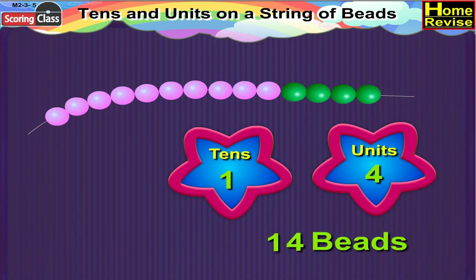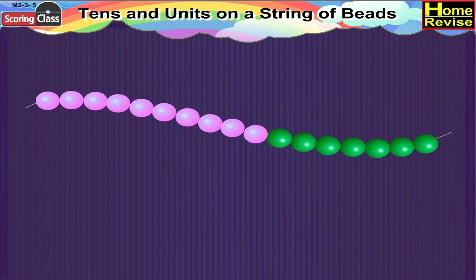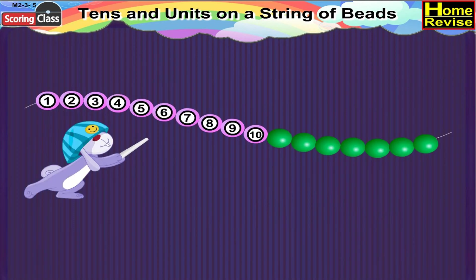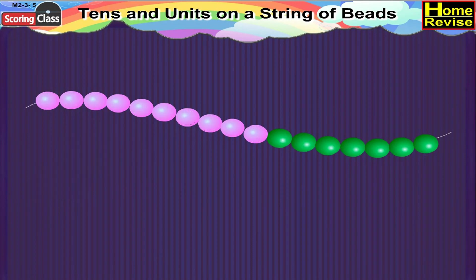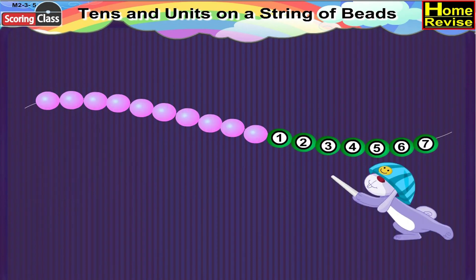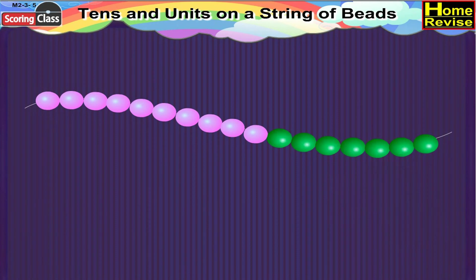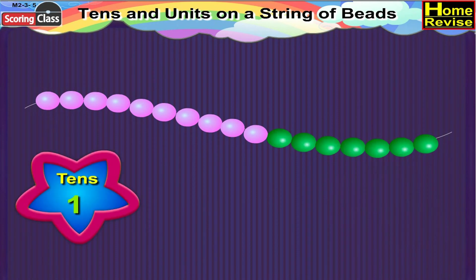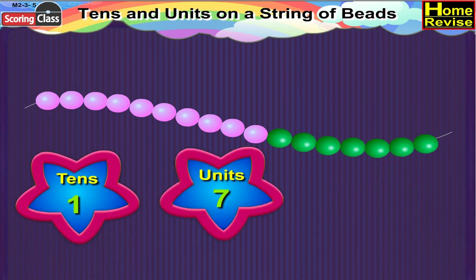In the second string, as you know, pink beads are ten in number. So seven green beads remain, which means it is one ten, seven units, or seventeen.